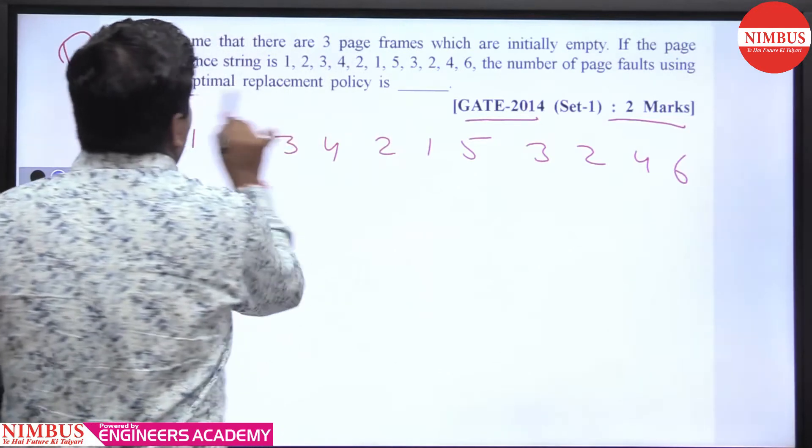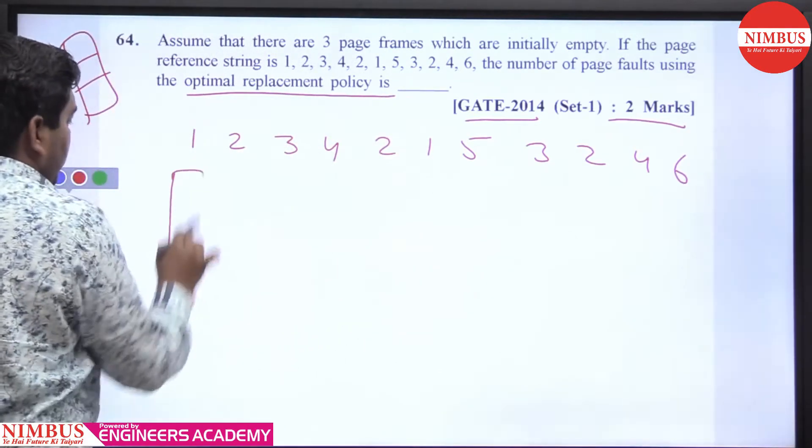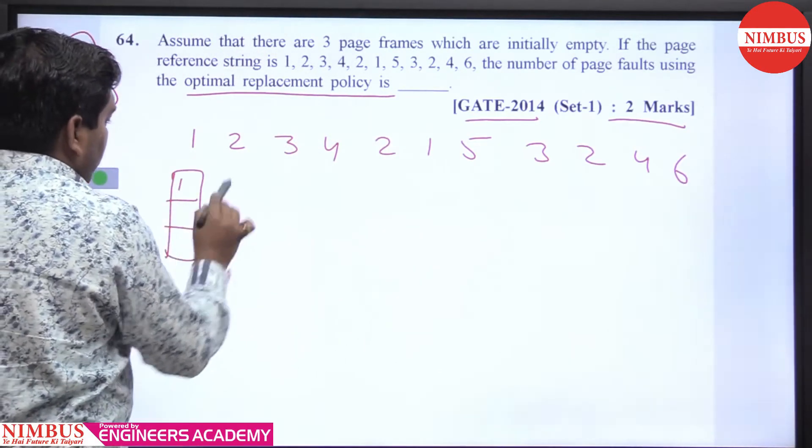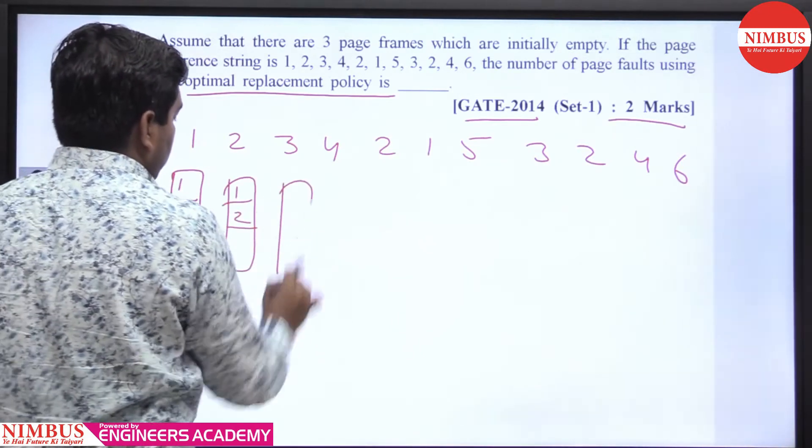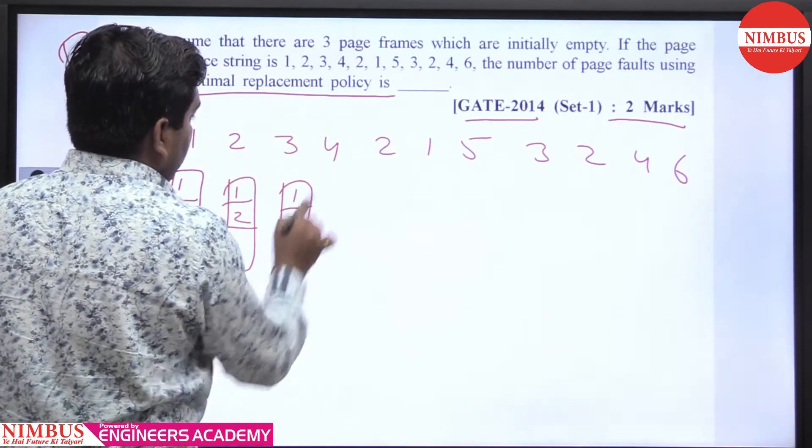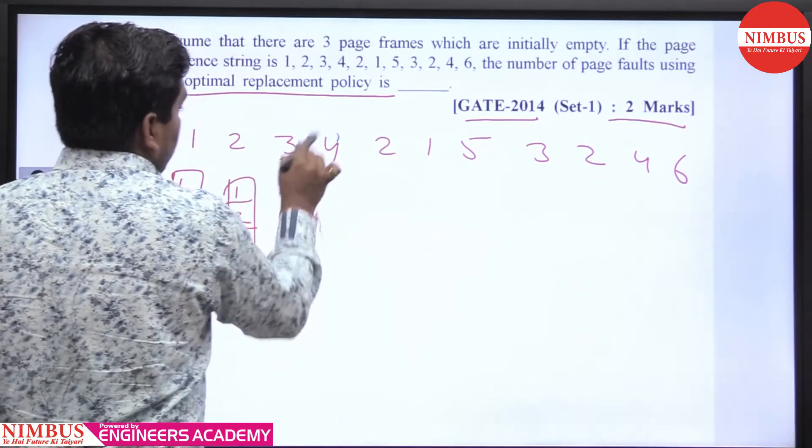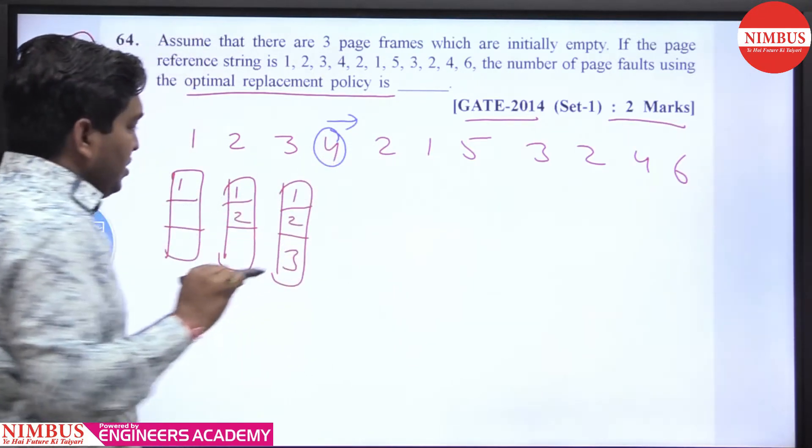We are asked about the optimal page replacement policy and the number of page faults. We will solve here: 1, 2, 3. There is a page fault at 4, then which one is replaced? We will look at the forward string.